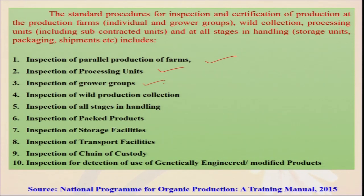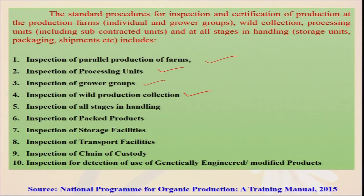Inspection of wild production collection — for instance, in Sundarbans, farmers go into the jungles to collect honey. Generally this honey is organic in nature, but there are certain norms before getting organic certification, especially regarding mixing wild honey with commonly cultured honey. Inspection of all stages of handling — not only production (sowing, transplanting, weeding) — but also harvesting, storing, threshing, food processing, and post-value addition. Every stage must be taken care of.